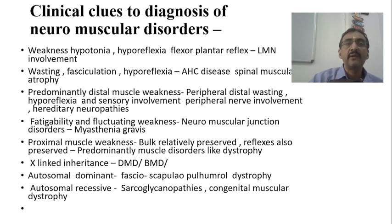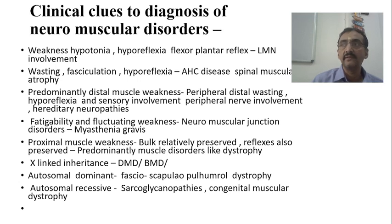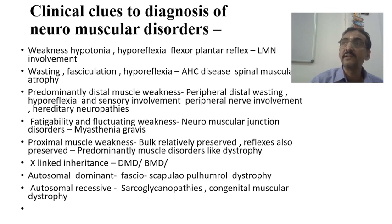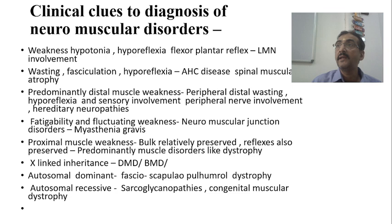If you look into the clinical clues for diagnosis of neuromuscular disorders: weakness of the muscle, hypotonia, hyporeflexia, and flexor plantar reflex together point towards a neuropathy — specifically a lower motor neuron lesion — rather than a muscular dystrophy or myopathy. Hypotonia is less likely in myopathies, whereas in neuropathies at the lower motor neuron region, you will have hypotonia.